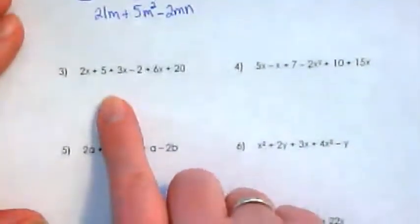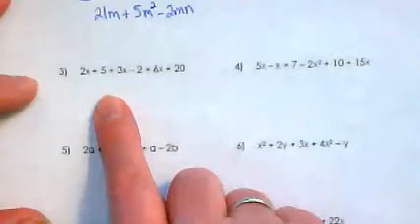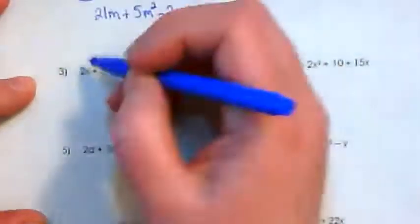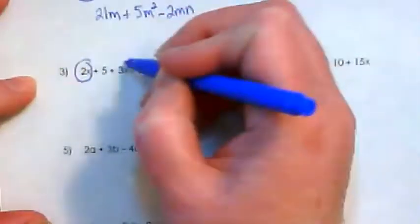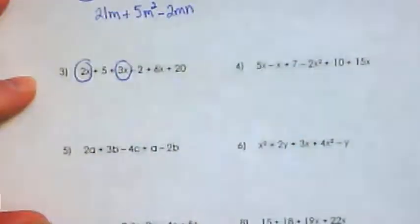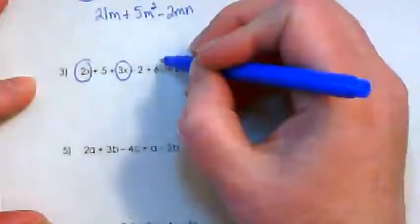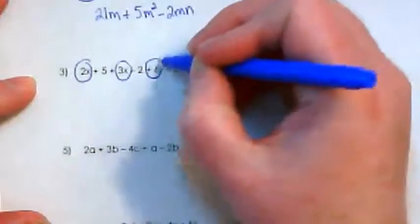Let's do number 3 together. 2x plus 5 plus 3x. I see this and this are matches. Minus 2 plus 6x plus 20.